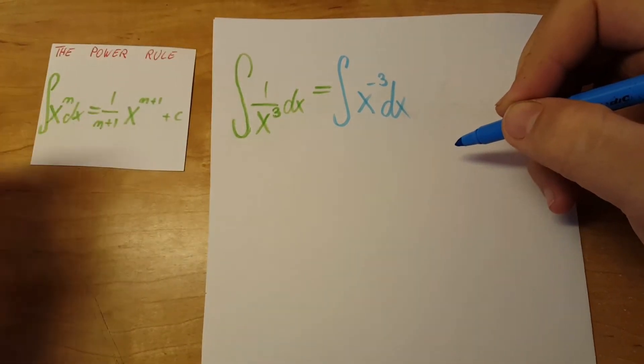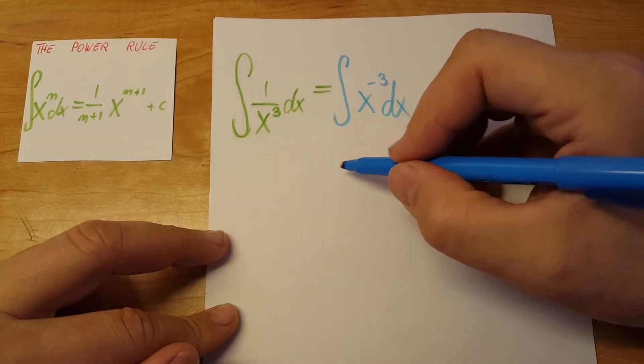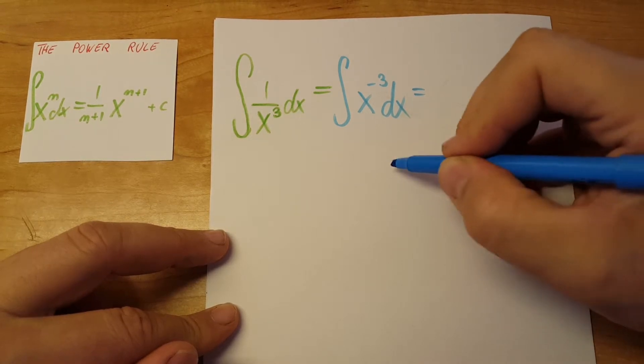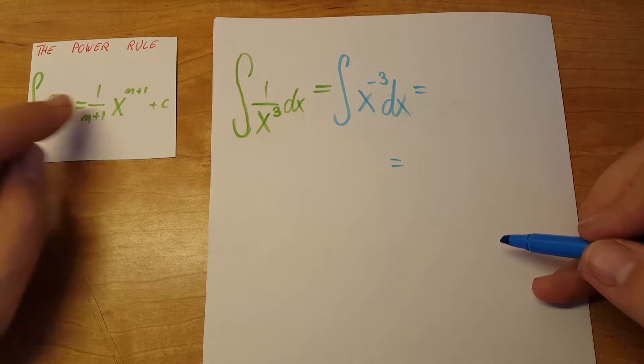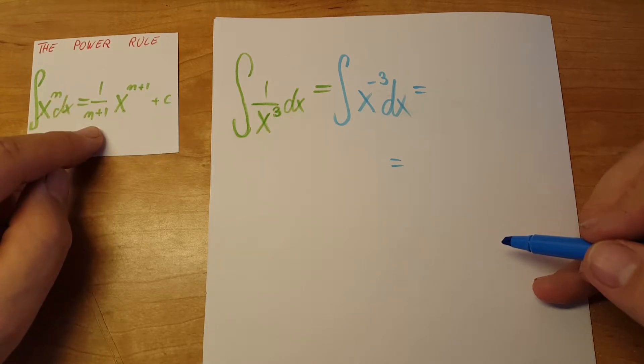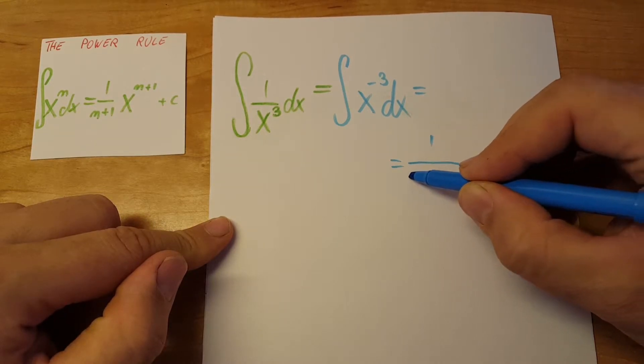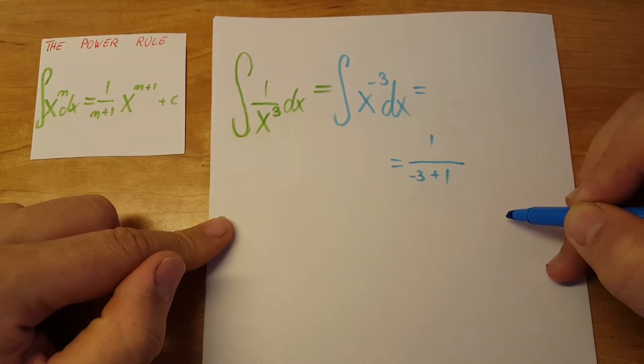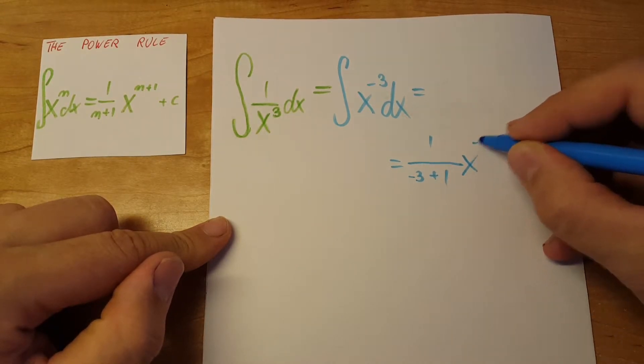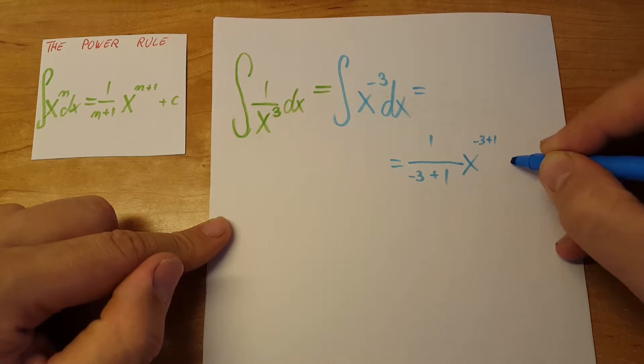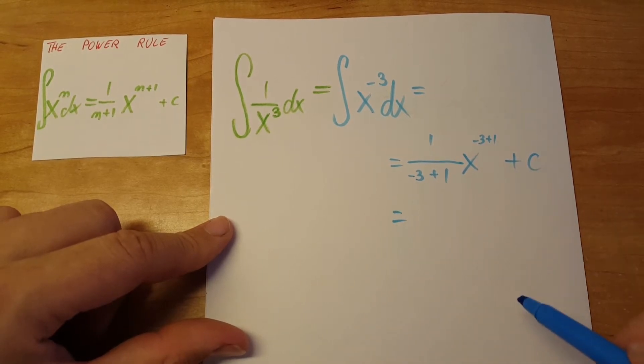Now we can see much easier that using the power rule will be just fine. Equal, and this would be one over n plus one, which would be one over n—our n is negative three plus one—times x to the n plus one, so negative three plus one, plus c. All right, let's make it pretty.